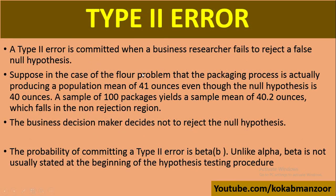Type 2 Error کیا ہوتا ہے؟ Type 2 Error is committed when a researcher fails to reject the false null hypothesis۔ مثال: flour packages کا actual population mean 41 ounces ہے، though the null hypothesis is 40 ounces۔ ہم نے 100 packages کا sample لیا اور غلط sample کی وجہ سے result 40 کے قریب آ گیا، تو ہم نے null hypothesis کو reject نہیں کیا — حالانکہ claim غلط تھا، actual mean 41 ounces تھا۔ یعنی ایک غلط claim کو reject نہیں کیا — this is Type 2 Error، جسے beta سے denote کرتے ہیں۔